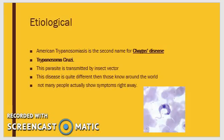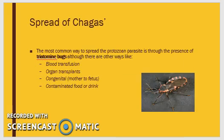Trypanosoma cruzi, or T. cruzi, is the protozoan parasite that is transmitted through an insect vector. The parasite itself appears differently around the world, and many people show no symptoms when infected. Chagas disease is a vector-borne disease transmitted primarily by triatomine insects, which are also called kissing bugs. Other ways the disease can be transferred include blood transfusion, organ transplant, congenital transmission from mother to fetus, and through contaminated food or drink.